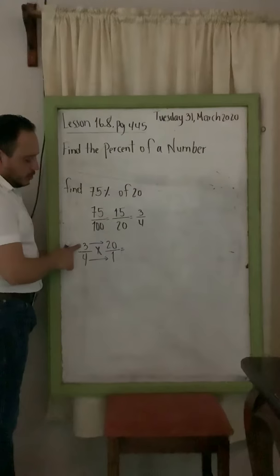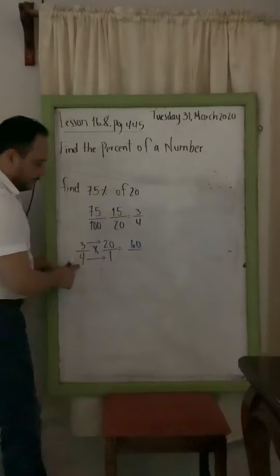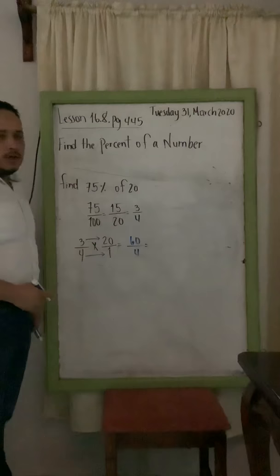3 times 20 is 60. 4 times 1 is 4. And then here,